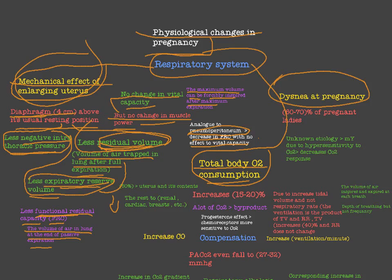Regarding total body oxygen consumption in pregnancy: it will increase, mostly due to the uterus and its contents consuming oxygen. As mentioned in the previous video, about 1200 ml per minute of blood flows to the uterus in pregnancy, consuming a large amount of oxygen — about 50% of oxygen consumption in pregnancy is in the uterus and its contents. The rest is in renal, cardiac, breast, and other tissues, giving an overall increase in total body oxygen consumption of about 15 to 20%.